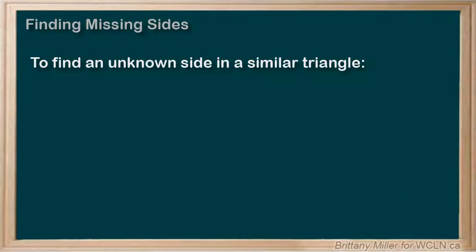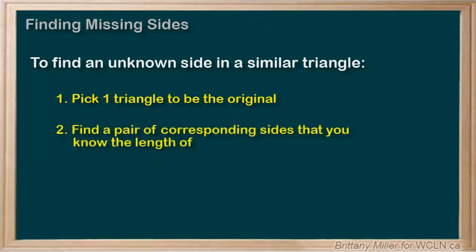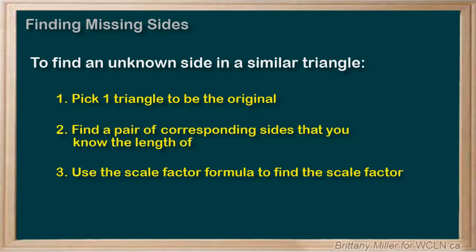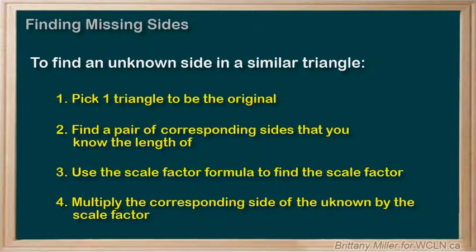In summary, to find an unknown side, our steps are: Pick one triangle to be the original. Find a pair of corresponding sides that you know the length of. Use the scale factor formula to find the scale factor. And then multiply the corresponding side of the unknown by the scale factor.